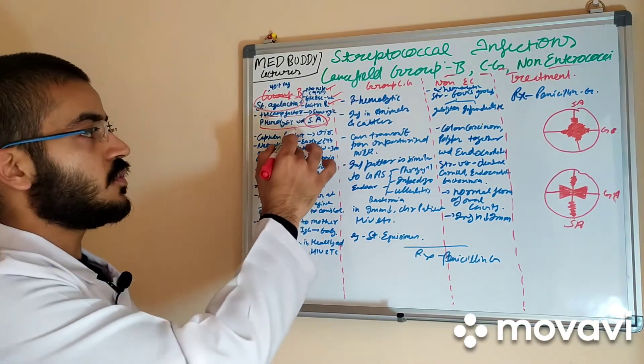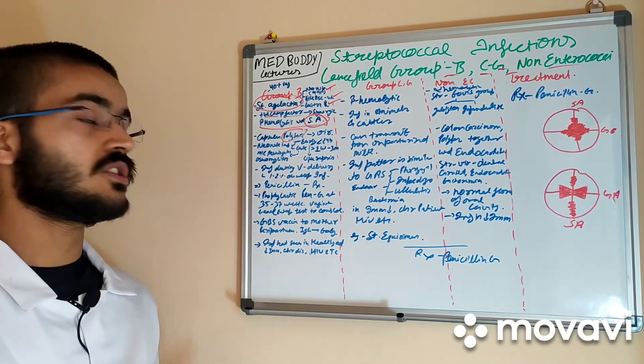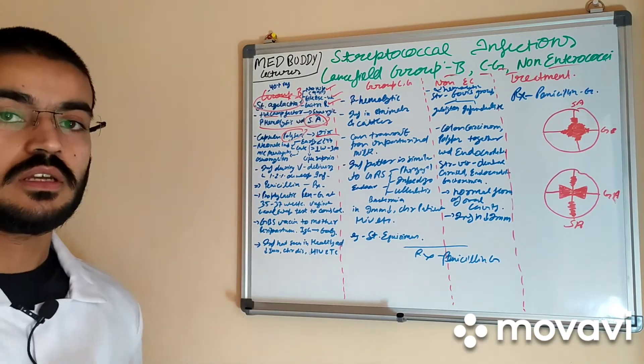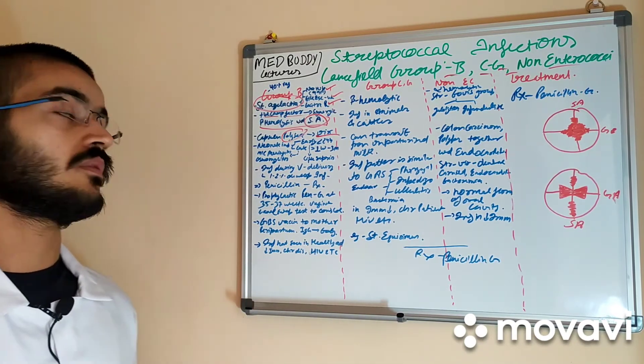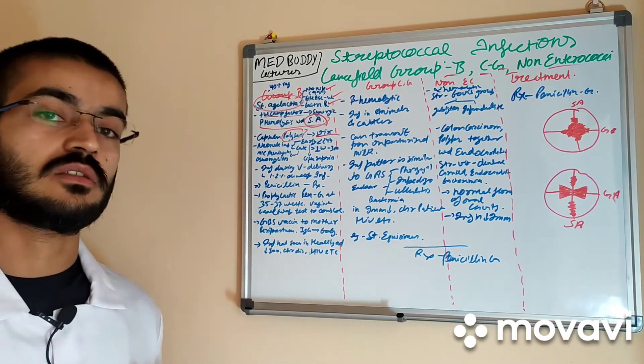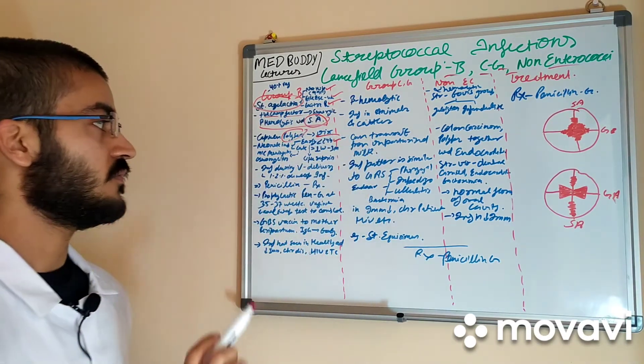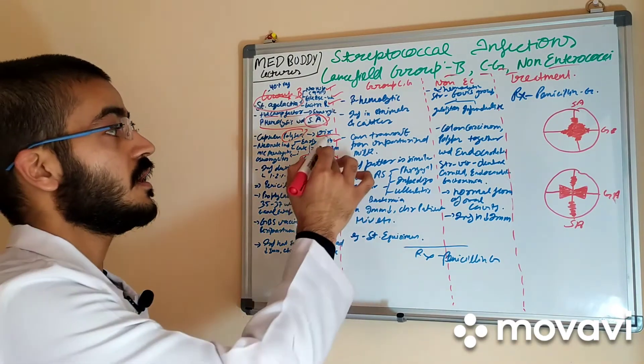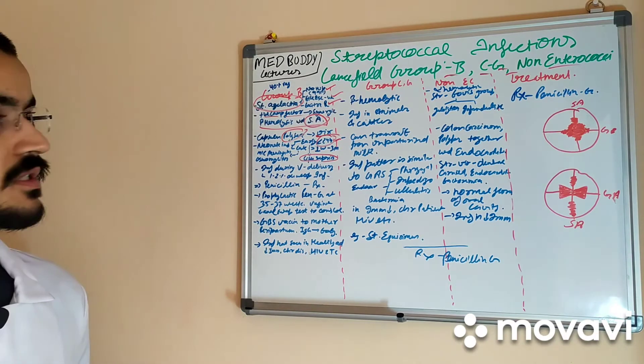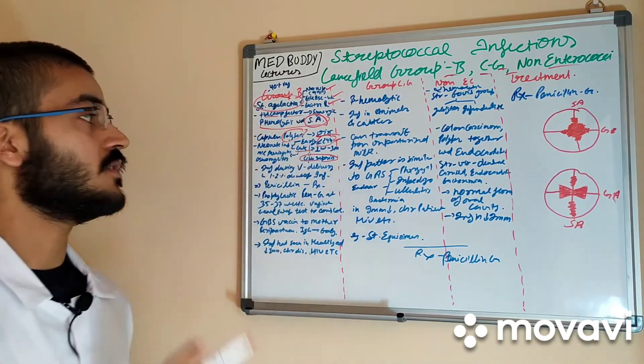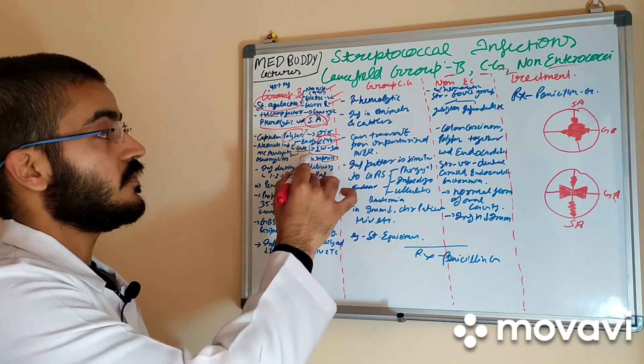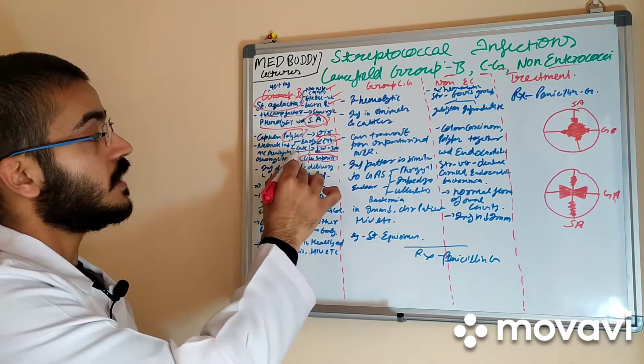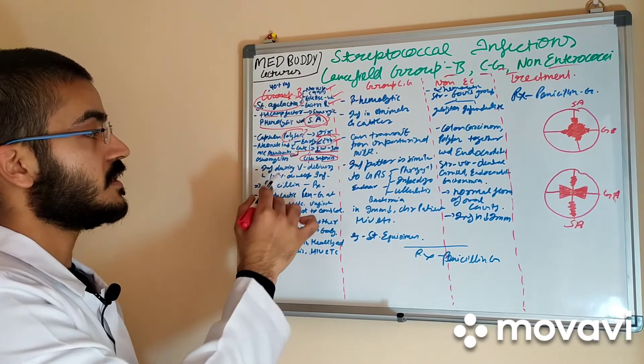It has capsular polysaccharide, means its capsule is very important for its virulence activity. It is responsible for most of the neonate infections such as early neonate infections which has symptoms similar to sepsis and occurs before 24 hours. It has late neonate infections which occur between one week to three months and these have symptoms like meningitis and osteomyelitis.